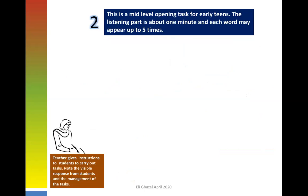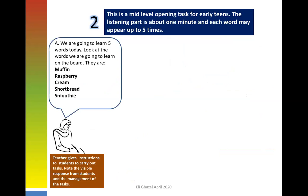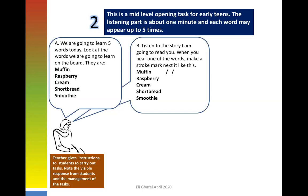The second task is mid-level — suitable for early teens in a government school or elementary students in an international school. The teacher says: 'We are going to learn five words today. Look at the words on the board: muffin, raspberry, cream, shortbread, and smoothie. Listen to the story I'm going to read. When you hear one of the words in the list, make a stroke mark next to it.'